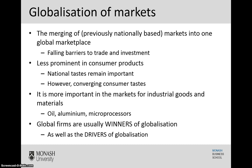What we tend to find is that the globalisation of markets tends to be less common in consumer products. We are seeing converging consumer tastes — for example, in Australia, many of the products we eat and drink are American or overseas-owned — but we also see a number of national tastes which remain significant and separate.